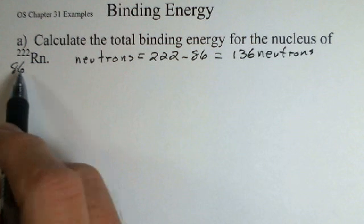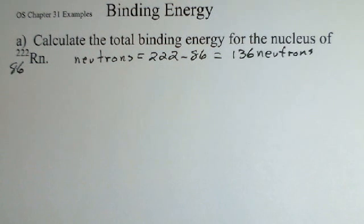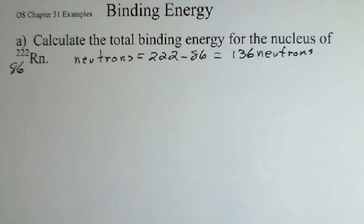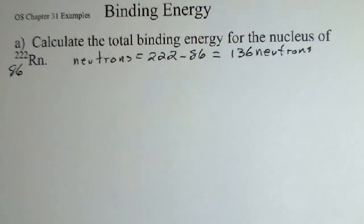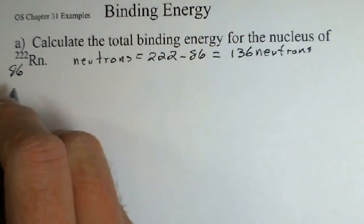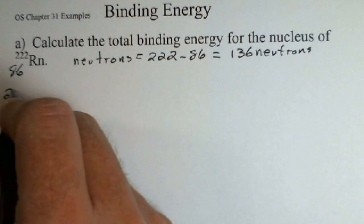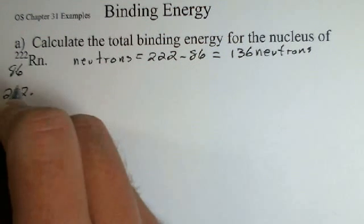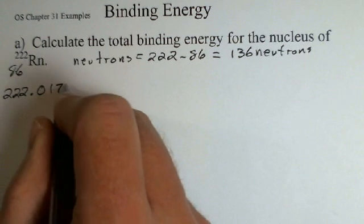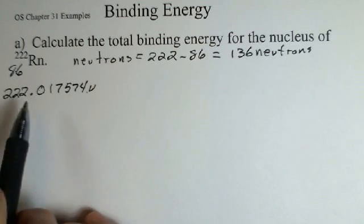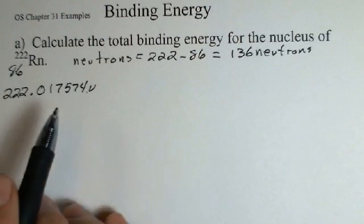We're going to recover the mass of the original nucleus from a table, actually from the neutral atom from a table, and use that table to recover the mass that we'll use to deal with the protons and the neutrons. First, the original nucleus, this radon mass is 222.017574. That is the neutral atom mass, the atomic mass units. It includes 86 electrons.